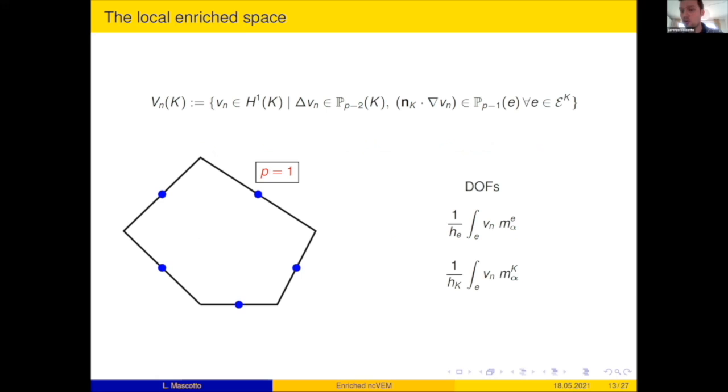And then I can define my nonconforming enriched virtual element spaces. But I want to be gentle. And then I recall briefly how the standard nonconforming thing looks like. So the local spaces consist of functions that solve the local Poisson-Neumann problem with polynomial right-hand side of degree p minus two and with Neumann boundary condition of degree p minus one. And the degrees of freedom are moments. So I have bulk moments of the sort and edge moments. This is standard nonconforming. No novelty. Old papers: Manzini, Yuzo, Lipnikov.